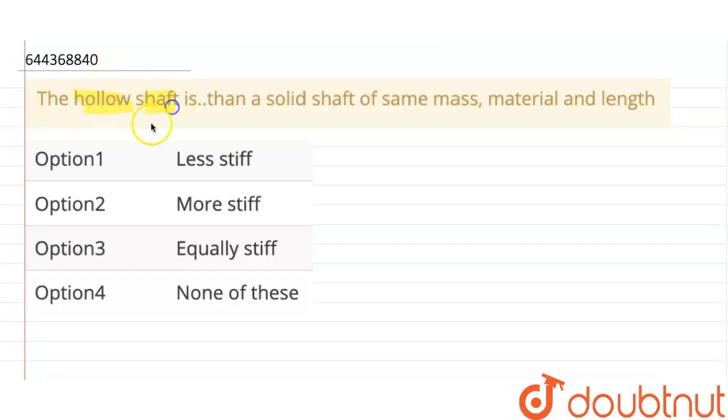The hollow shaft, fill in the blanks, is blank than a solid shaft of same mass, material, and length. So mass, material, and length of solid shaft and hollow shaft is same. We need to comment on its stiffness. Option 1: less stiff. Option 2: more stiff. Option 3: equally stiff. Option 4: none of these.